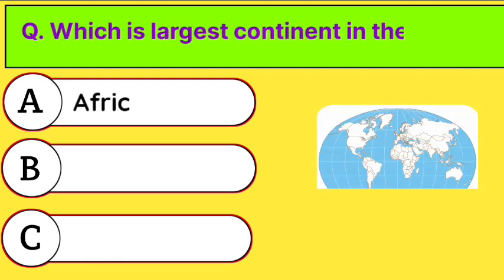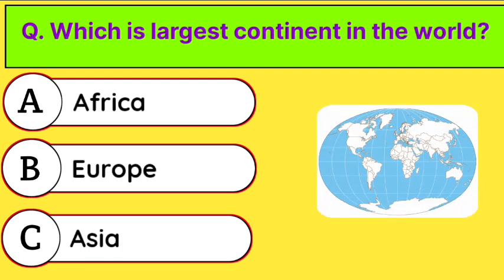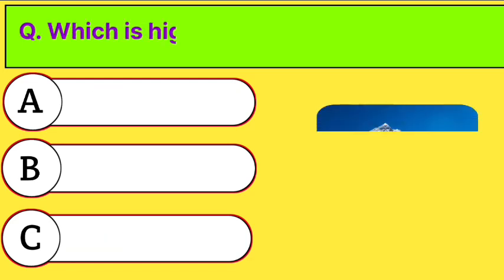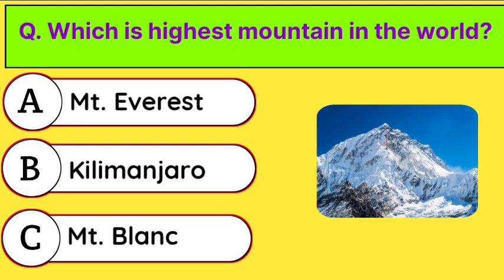Which is the largest continent in the world? Correct answer is option C. Asia. Which is the highest mountain in the world? Correct answer is option A. Mount Everest.